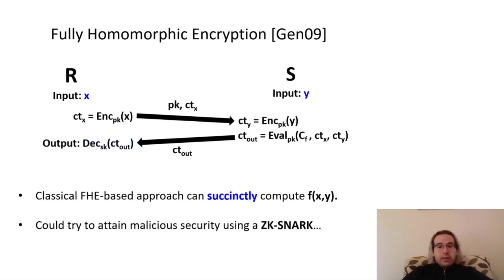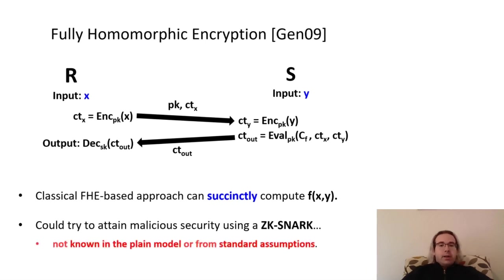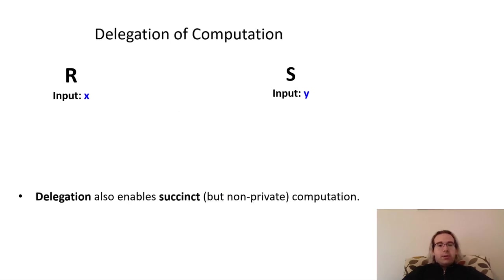One potential fix for this would be to use a ZK-SNARK, or a succinct non-interactive argument of knowledge, to have the sender prove that they indeed performed the correct computation, but this would be somewhat unsatisfying, as ZK-SNARKs aren't known in the plain model, or, for that matter, from standard assumptions. Instead, let's investigate another way of obtaining such a soundness property, using protocols for what is known as delegation of computation.